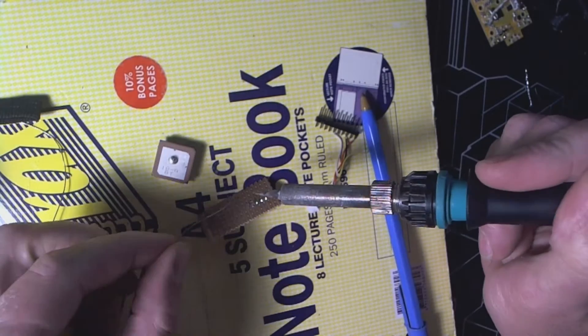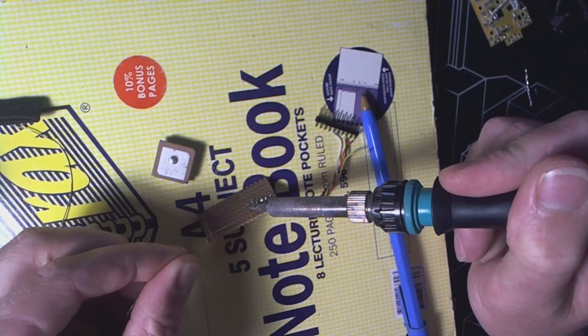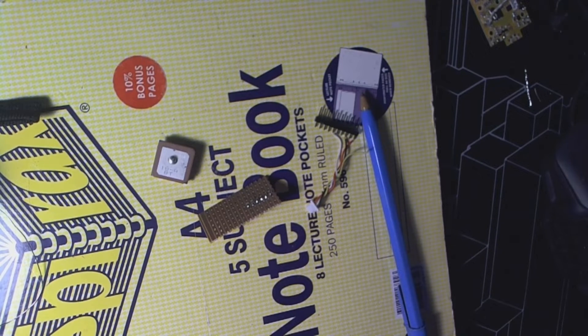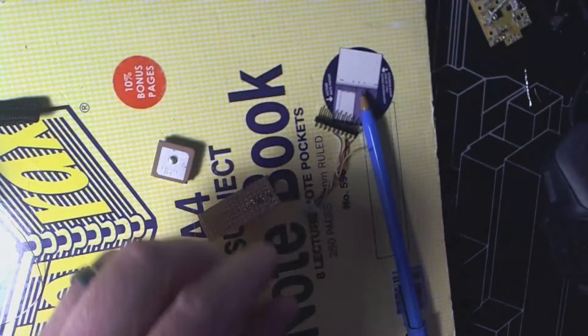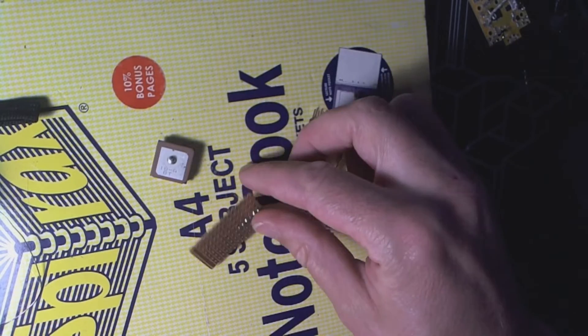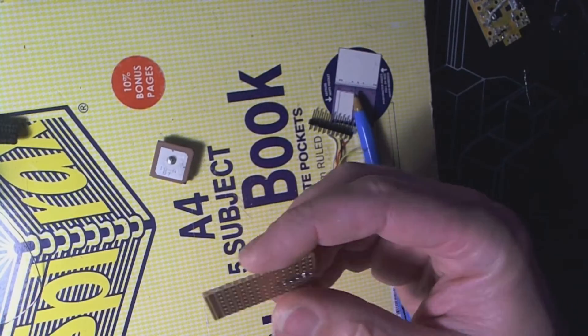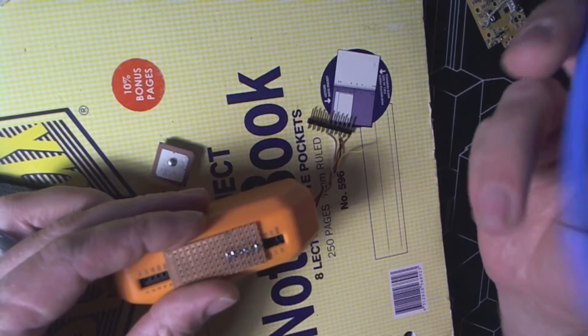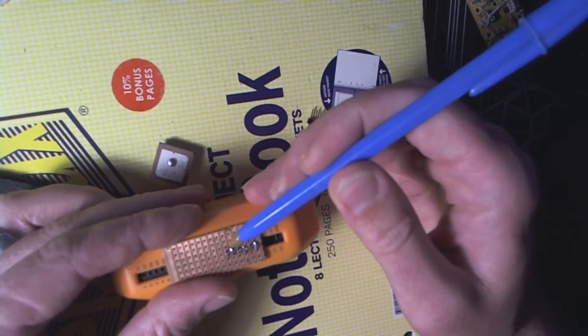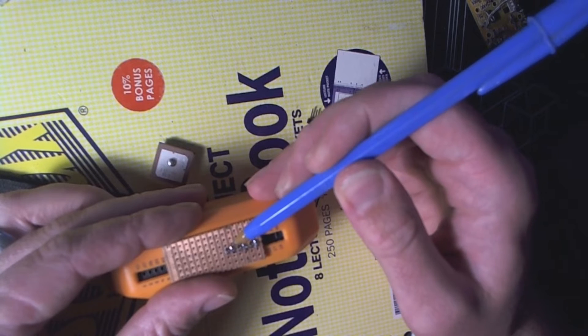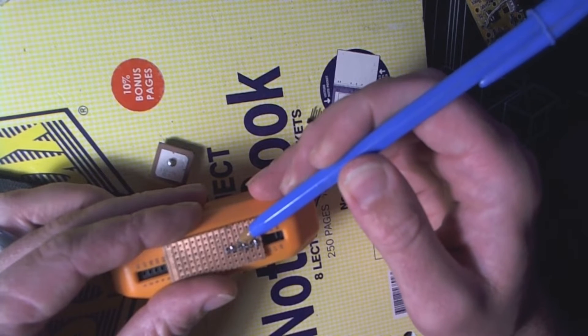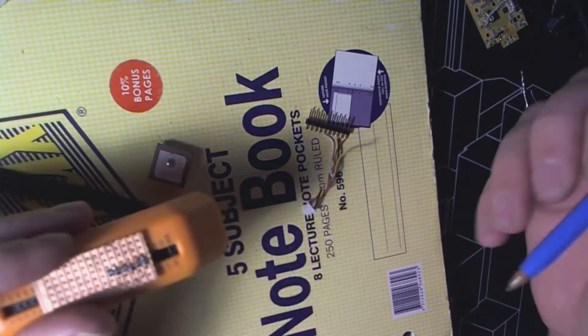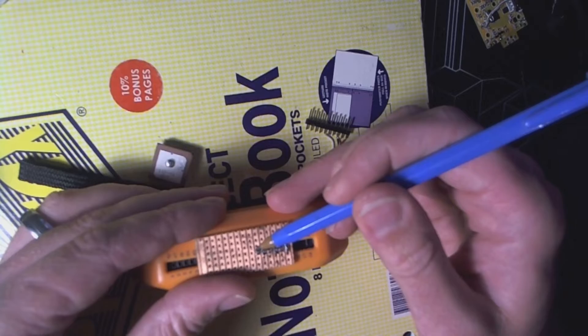I tried to do a better job soldering this. So remember on our flipper, this will plug into here. This pin here is our voltage, this pin here nothing, ground, nothing, and these are our data pins.